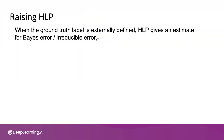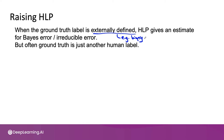To summarize: when the ground truth label is externally defined, such as a medical biopsy, HLP gives an estimate for base error and irreducible error in predicting the outcome of that test. But there are also many problems where the ground truth is just another human label.